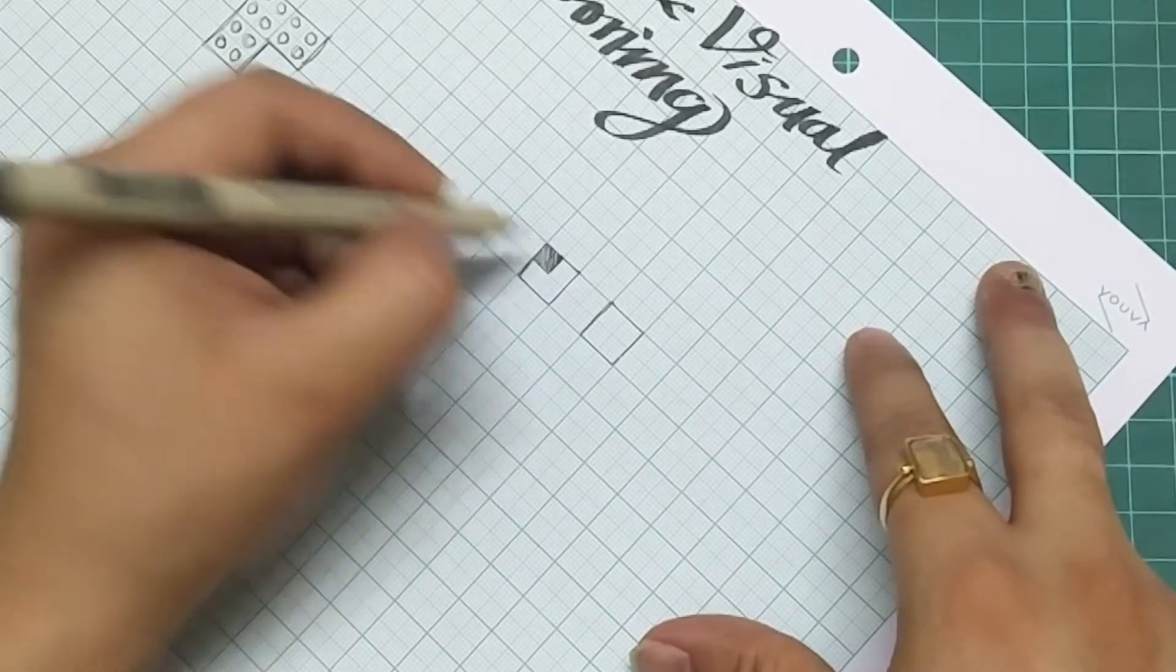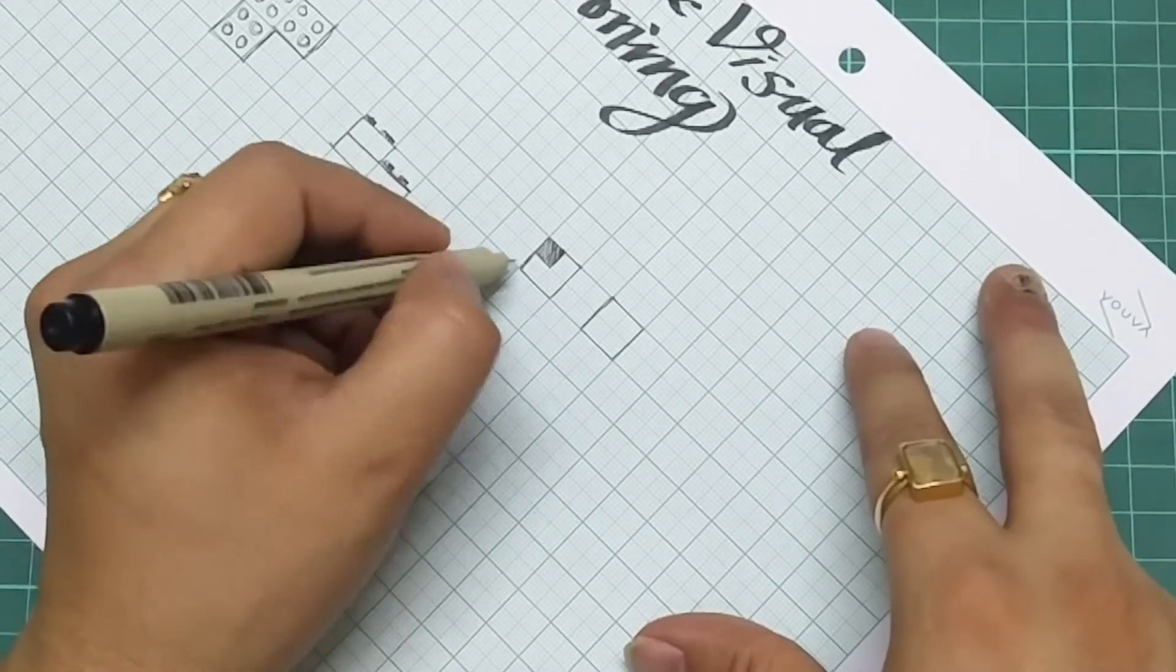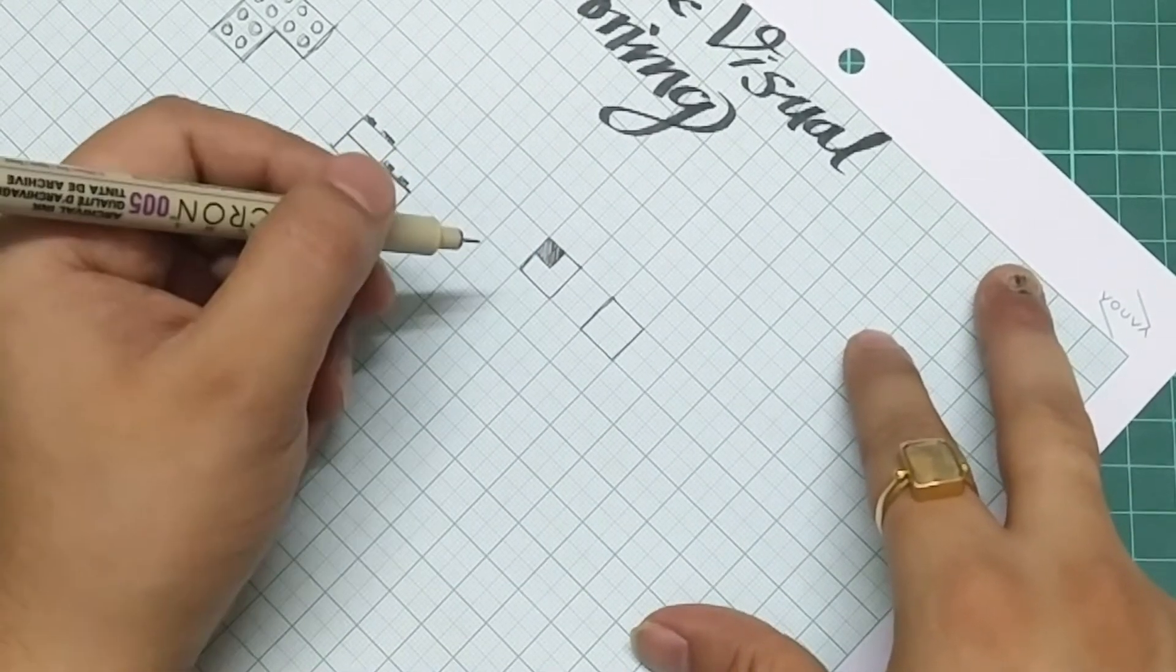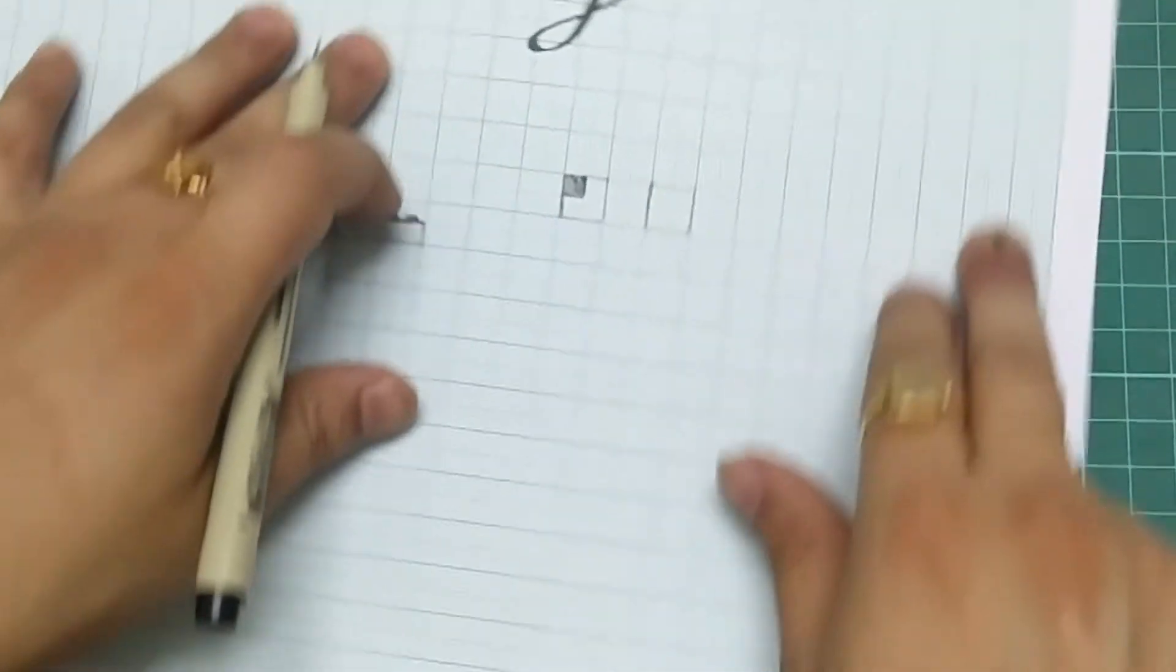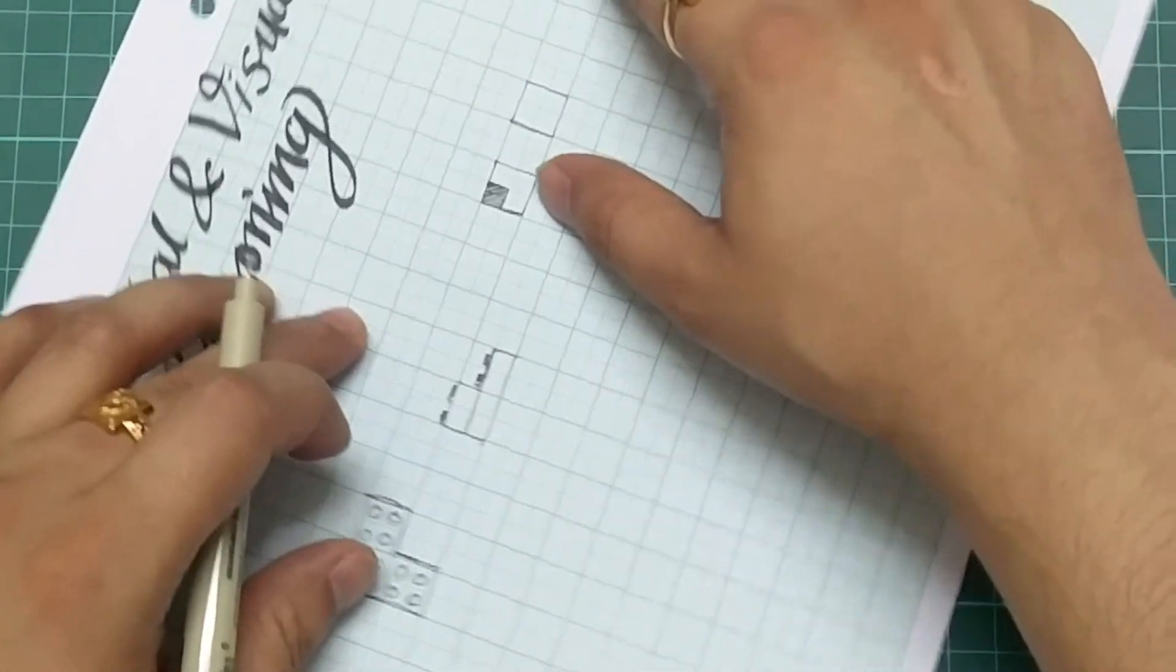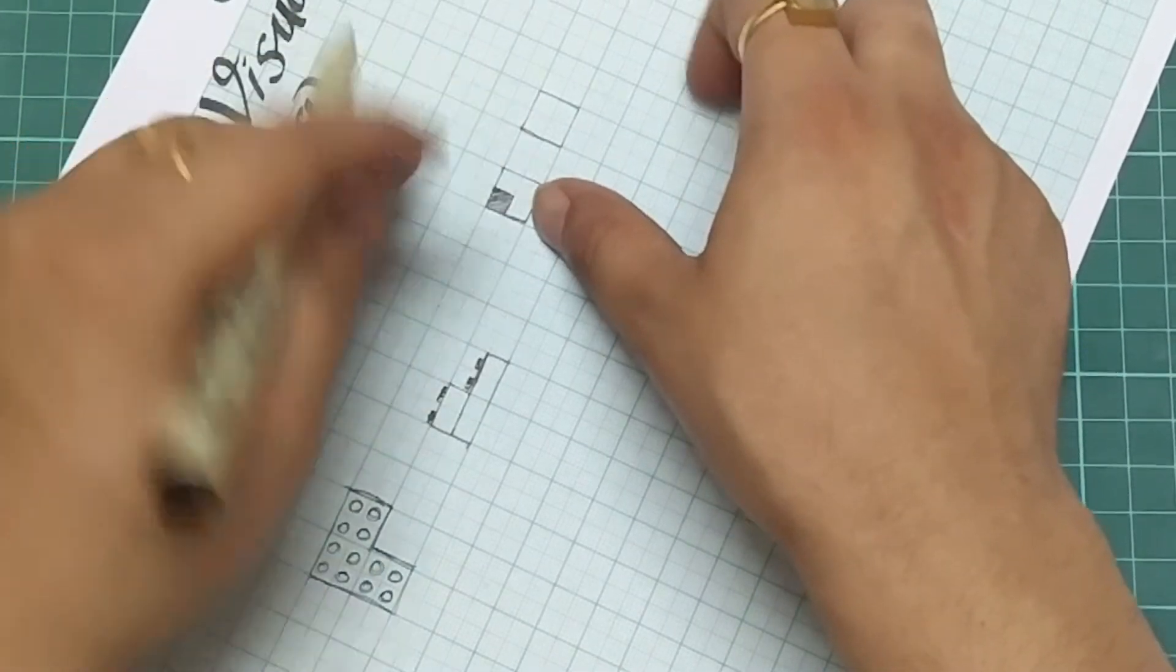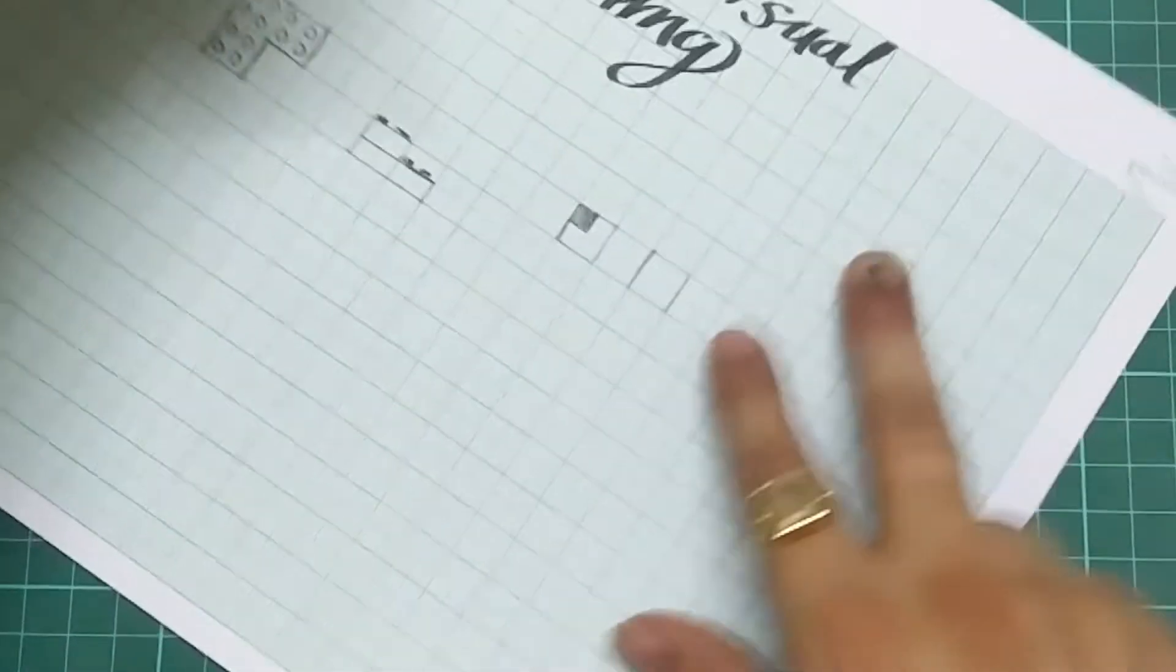You darken this area. Now you rotate it by 90 degrees—so let's say this is your zero. I rotate it by 90 degrees, so now this square will come here. The same thing I'll draw here.